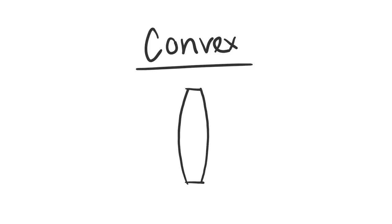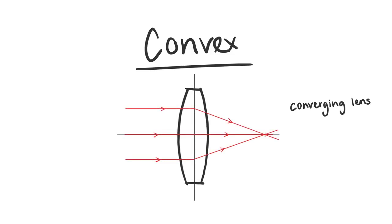Let's take a look at the convex lens first. This lens is also called a converging lens. That is because of the way the parallel light rays get refracted through the lens. You can see that there is an interception point.